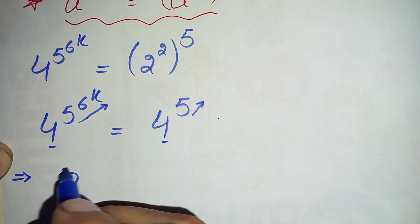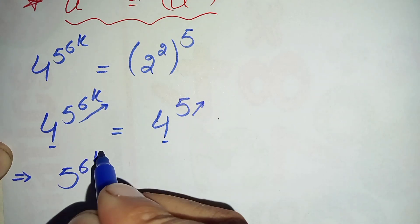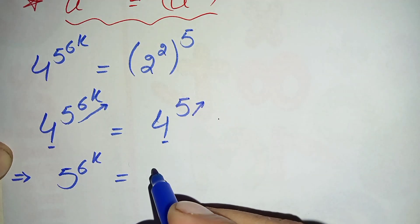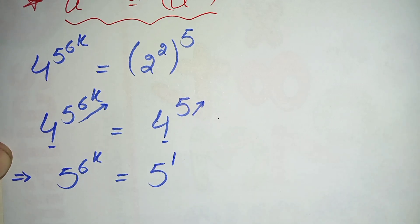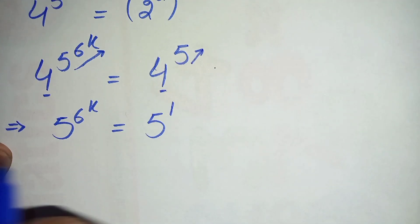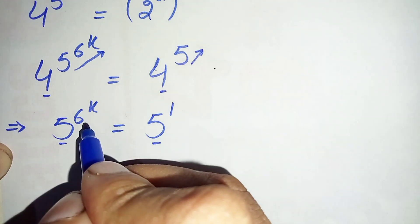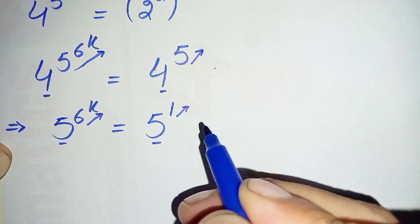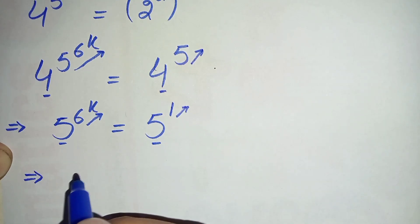Comparing the powers gives us: 5 raised to power 6 raised to power k is equal to 5 raised to power 1, since we can write 5 as 5 raised to power 1. Again, looking at both sides, the bases are the same, so we compare the powers again: 6 raised to power k equals 1.